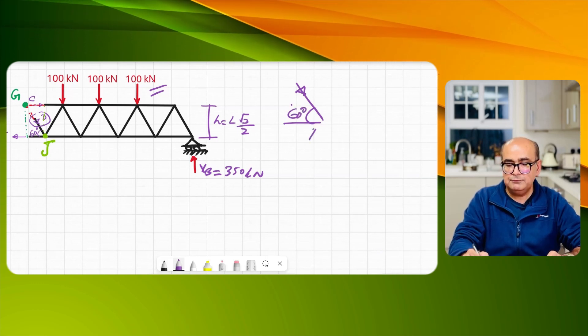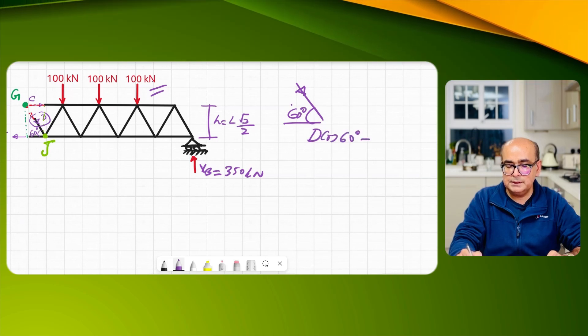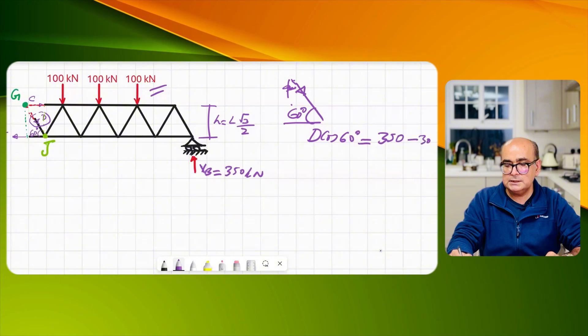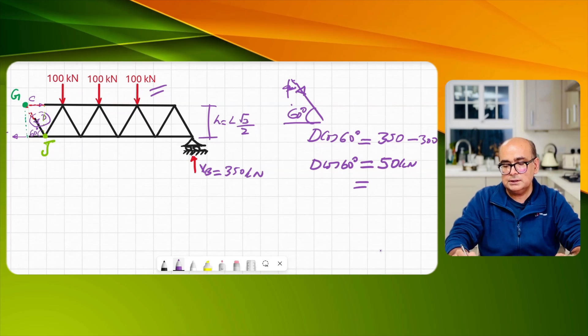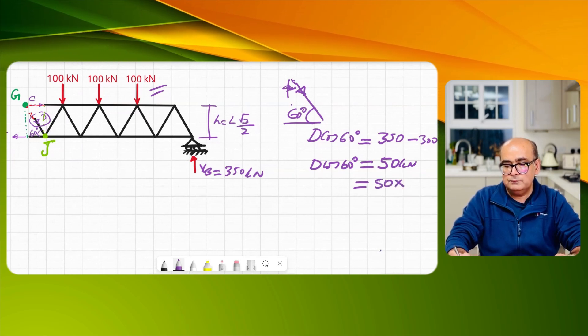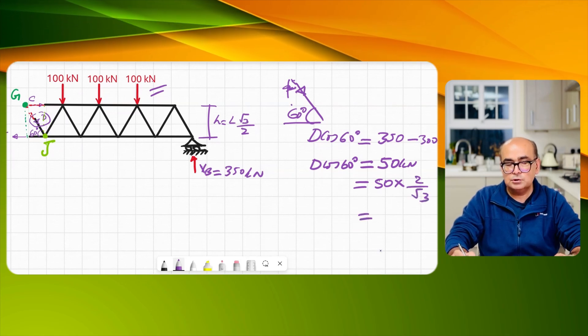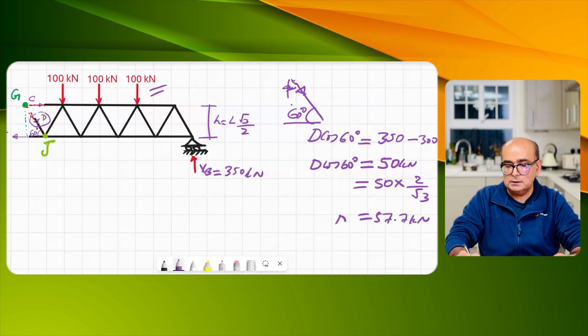So let me find out d cos 60 will be equal to the total vertical load, unbalanced one is 350 take away 300, this is 50 kilonewton. Cos 60 is √3 over 2, 50 into 2 over √3, so this will give me 57.7 kilonewton.